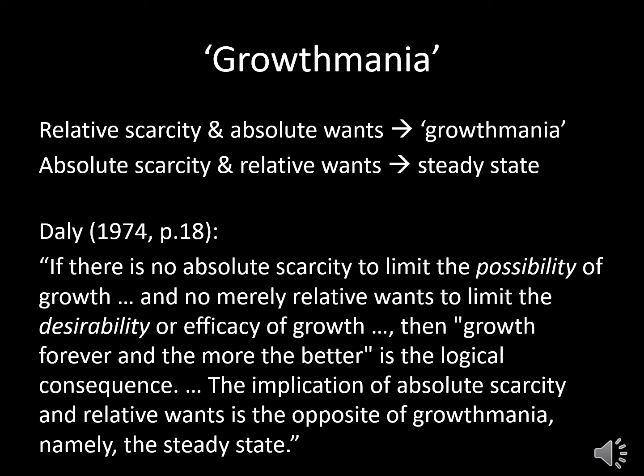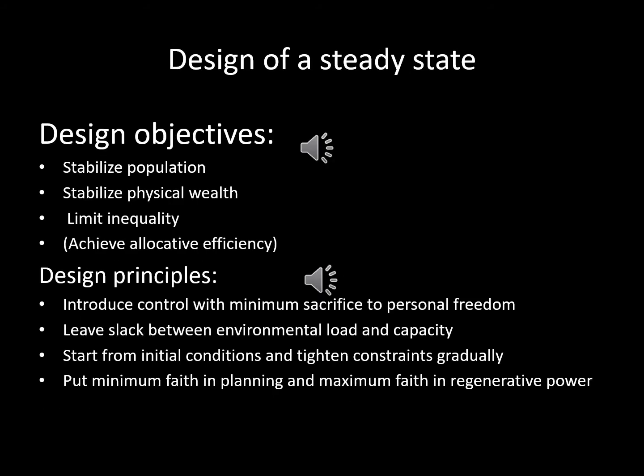The implication of absolute scarcity and relative wants is the opposite of growth mania, namely the steady state. Daly also speculates over what institutions such a steady state economy would need, formulating three clear design objectives: to stabilize population and physical wealth while limiting inequality, and a fourth stretch goal of achieving allocative efficiency. He proposes four design principles: limiting sacrifices to personal freedom, leaving slack between environmental pressure and capacity, starting from current rather than imaginary conditions to tighten constraints gradually, and putting minimum faith in our ability to plan while putting maximum faith in nature's regenerative power.